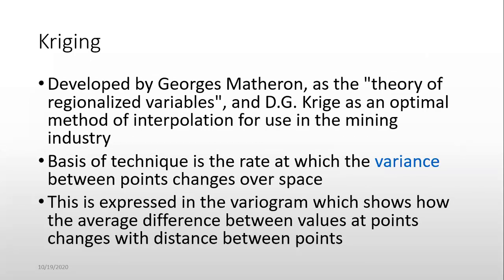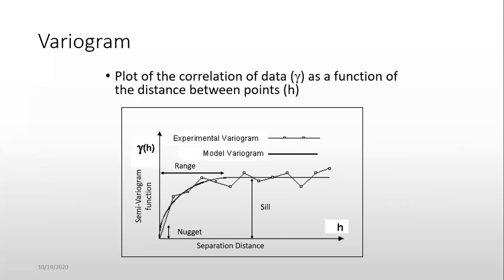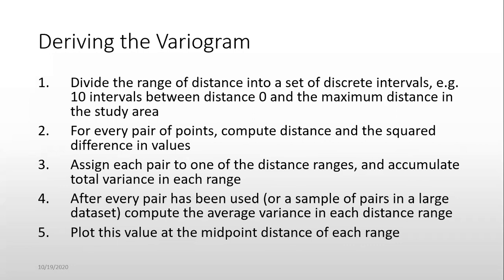Deriving the variogram. Divide the range of distance into a set of discrete intervals, example: 10 intervals between distance zero and the maximum distance in the study area. For every pair of points, compute distance and the squared difference in values. Assign each pair to one of the distance ranges and accumulate total variance in each range. After every pair has been used or sample of pairs in large datasets.